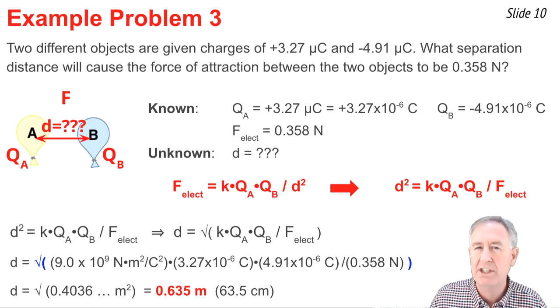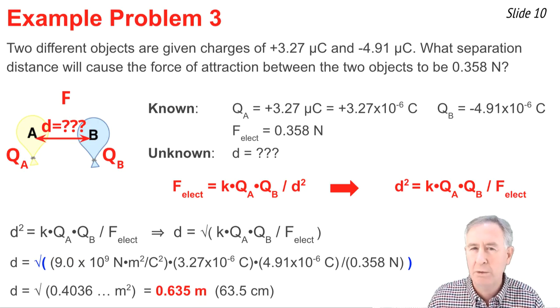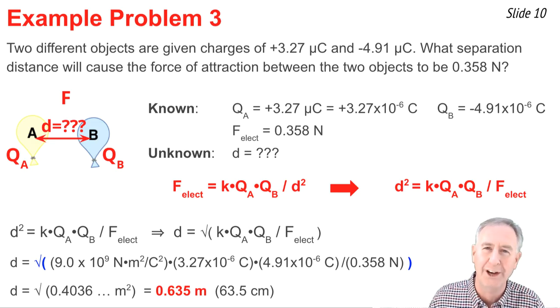Now one thing to make a note of is that when I put in values for QA and QB, I didn't put in the plus and the minus sign. You really don't need to and you really shouldn't either. Because Q stands for the quantity of charge. And that has nothing to do with the type. The plus and minus tells you it's charged positively or negatively. And the Q is just how much. So ignore the plus and the minus when you're working with Coulomb's law equation.